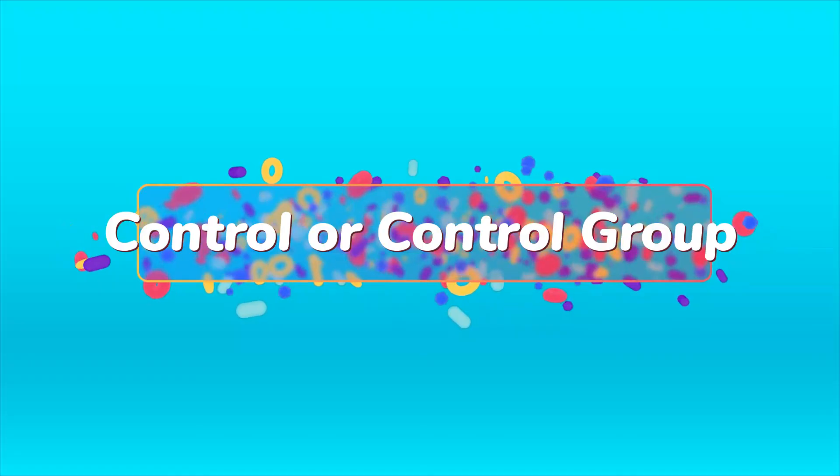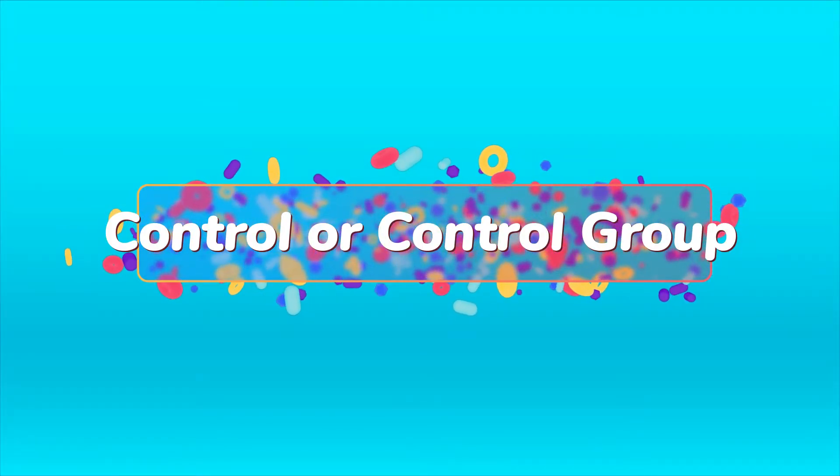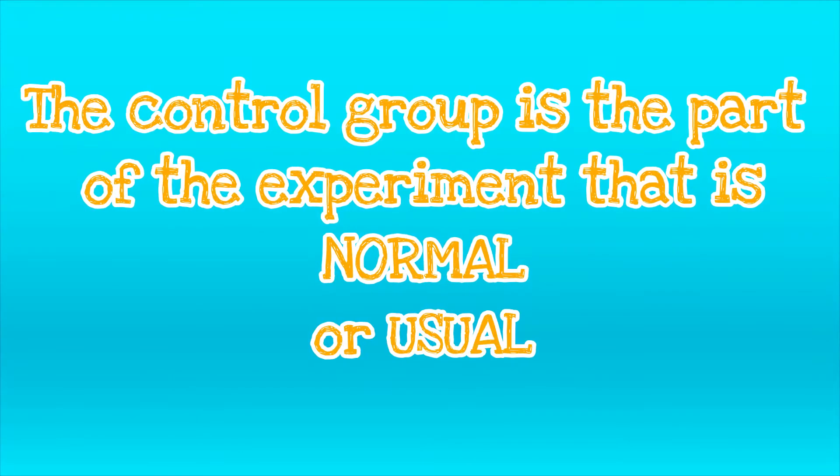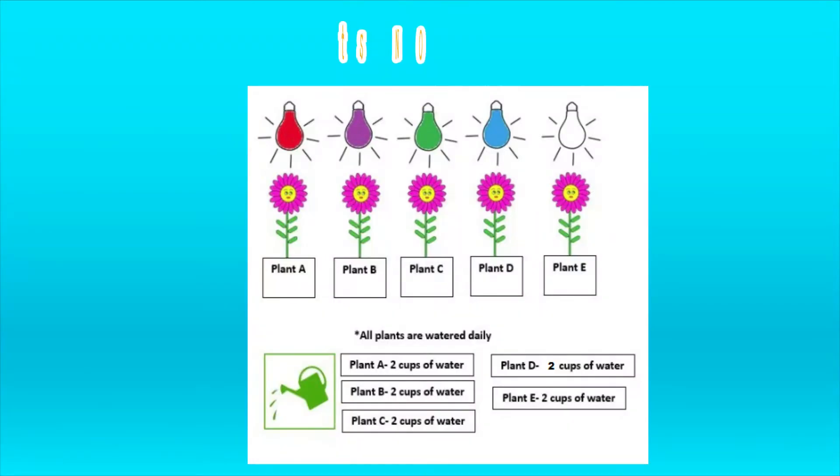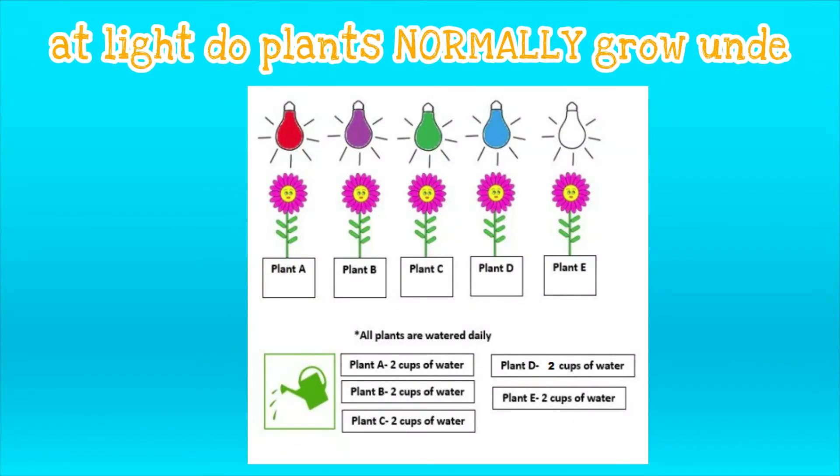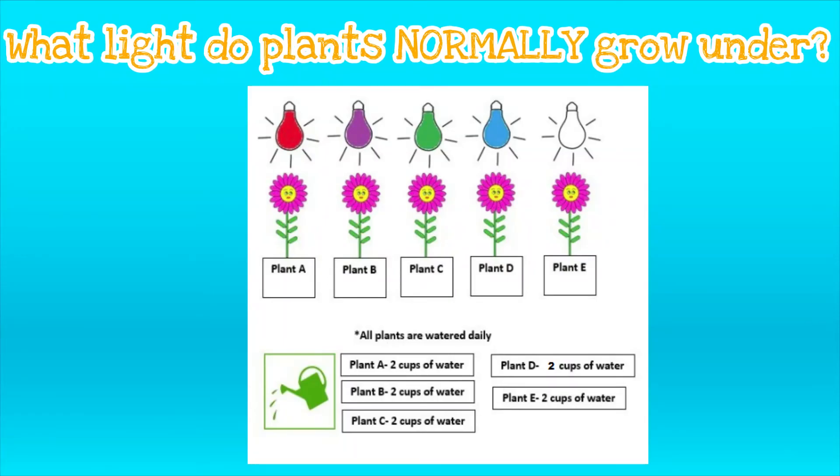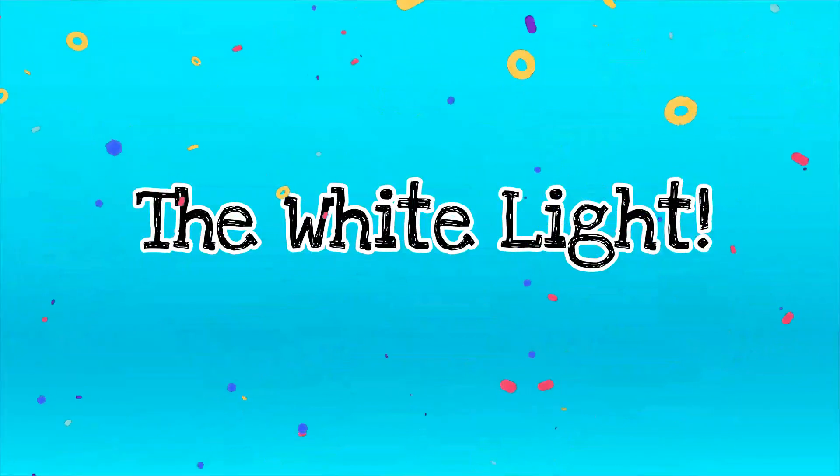Last but not least, I'm going to discuss the control or the control group. The control or the control group is the part of the experiment that is normal or usual. So ask yourself the question for this experiment, what color lights do plants normally grow under? That answer would be natural light or white light.